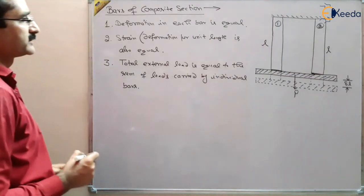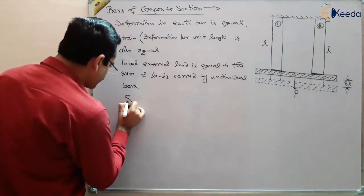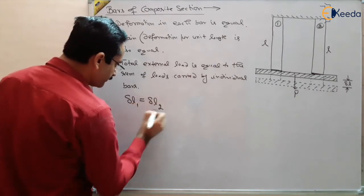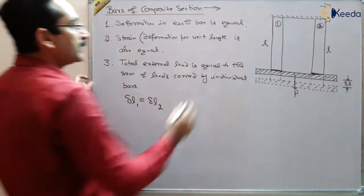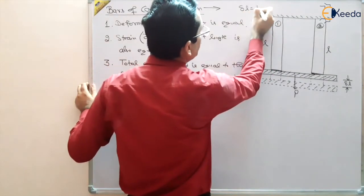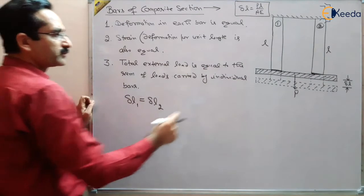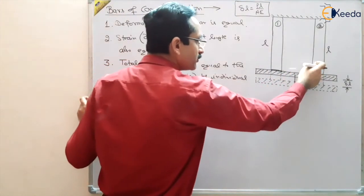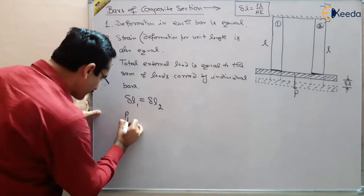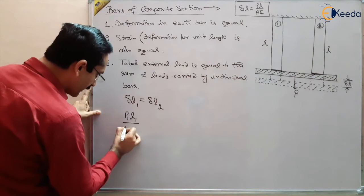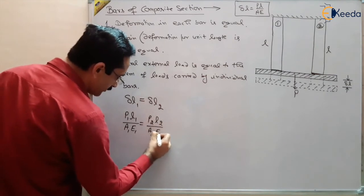From these three points, we can write that Delta L of bar 1 equals Delta L of bar 2. Using our basic formula, Delta L = PL / AE, we get: P1 * L1 / (A1 * E1) = P2 * L2 / (A2 * E2). Here, P may be different for each bar since both materials can have different modulus of elasticity, and L, A may also differ.